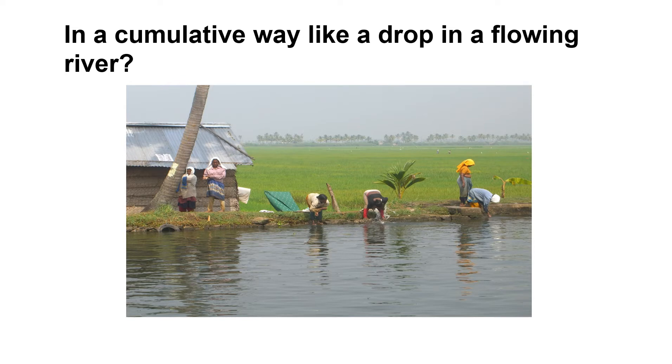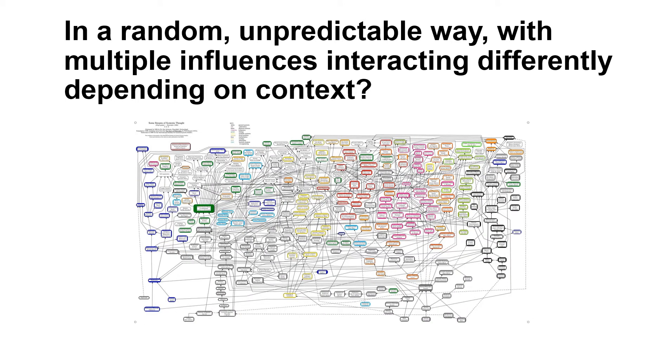Is it a cumulative way, like a drop in a flowing river? Or is change just random and unpredictable with multiple influences interacting differently depending on context?